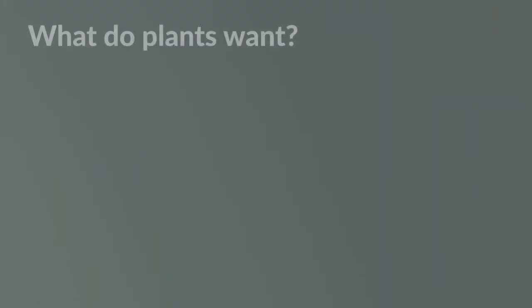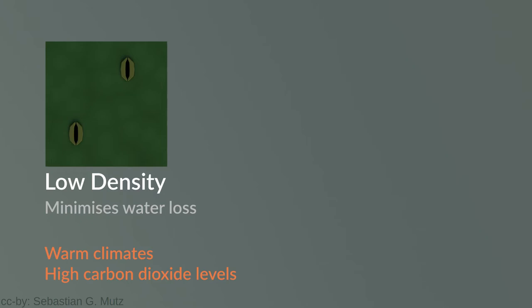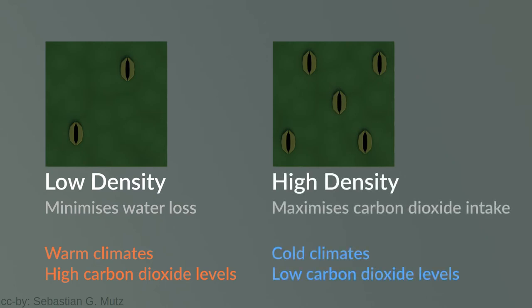Two things that the plant is interested in is to retain water and to make sure it gets enough CO2. A larger number of openings would allow more intake of CO2 but would potentially also lead to more loss of water. In warm climates CO2 levels are higher and the plant is more at risk of losing water. So the plant has to worry less about getting enough CO2 but it has to try to prevent too much water loss. With a lower density of stomata the plant does just that. Therefore a lower density of stomata indicates warmer climates with higher CO2 levels. Cold climates correlate with a lower level of CO2. A high density of stomata maximizes the CO2 intake in a climate in which the plant has to worry less about losing water.